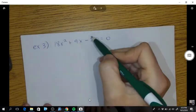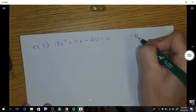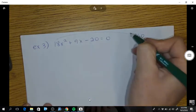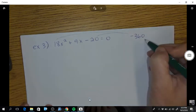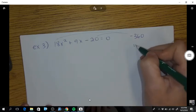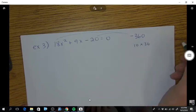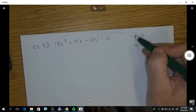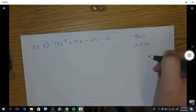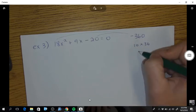We're going to take this times that. So negative 360. Okay, let's get some combinations that make me 9. I'm going to start with 10 times 36. One of them is negative because of the negative.